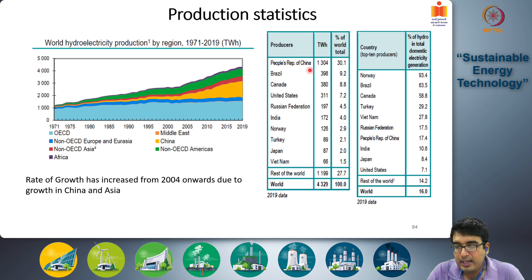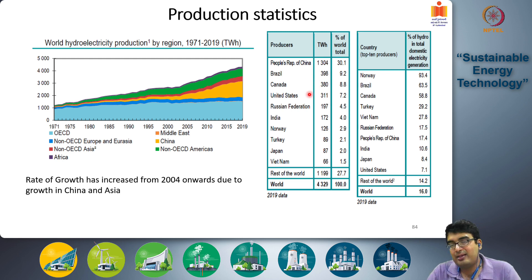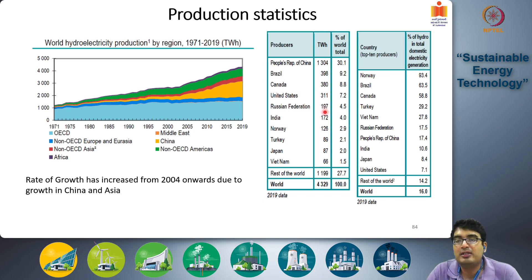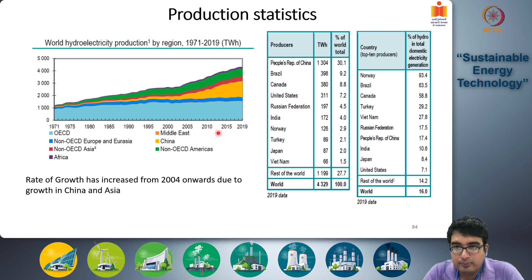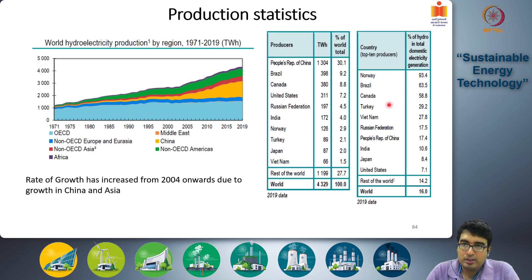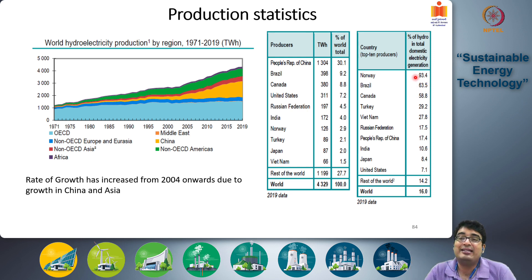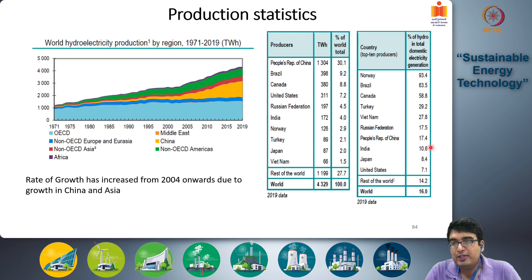China stands as number one with 1304 TWh. Brazil is second with 398 TWh. Canada, an OECD country, produces 380 TWh. The United States produces 311 TWh. Russia is around 197 TWh. India is in sixth position at 172 TWh. Notice however that as a percentage of total electricity generation, Norway, Brazil, and Canada generate a significant fraction of their total electrical requirements from hydroelectric power — Brazil at 63% and Canada at 58%.